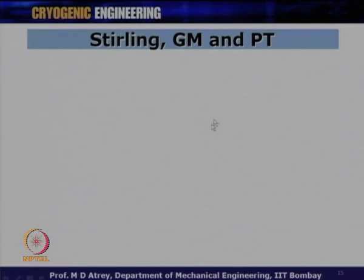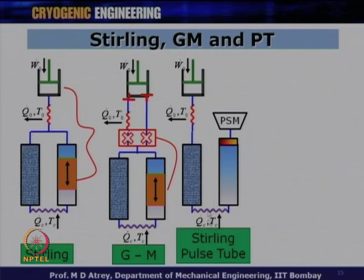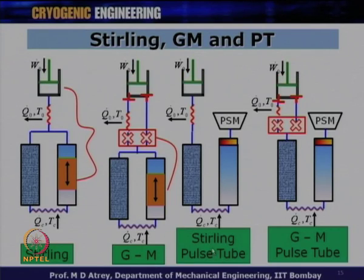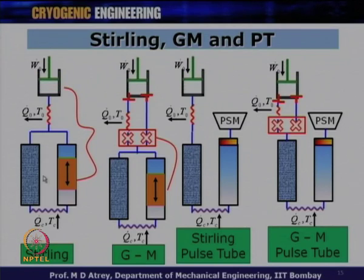Looking at all three together — Stirling, GM, and pulse tube cooler — we have: a Stirling cryocooler, a GM-type cryocooler, and a Stirling-type pulse tube cooler (very compact and miniature, no valve) and a GM-type pulse tube cooler (has a valve between compressor and expander). It is very important to understand: GM cooler has a valve between compressor and expander; pulse tube has no displacer; Stirling has no valve between piston and expander. This classification of Stirling-type versus GM-type pulse tube cooler must be completely understood.